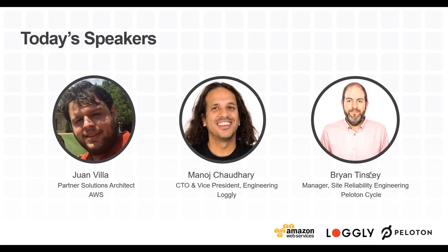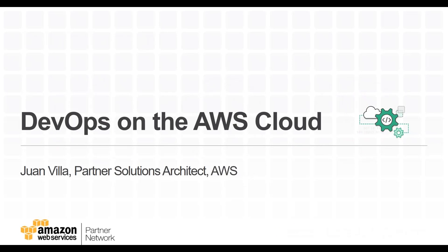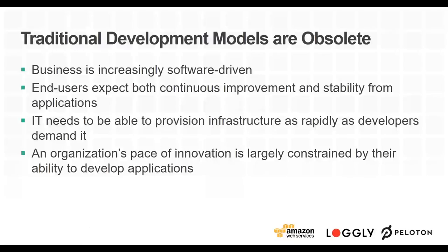Let's start by talking about DevOps and the AWS cloud, and why traditional development models are obsolete. Businesses are increasingly software-driven today — it's how we're innovating. End users expect both continuous improvement and stability from the applications they use every day. IT needs to provision infrastructure rapidly and with flexibility as developers innovate.